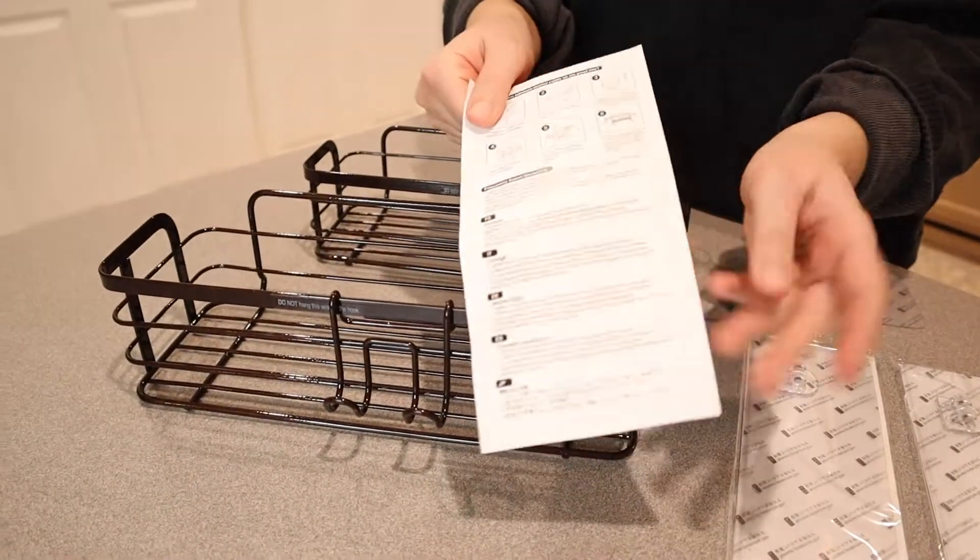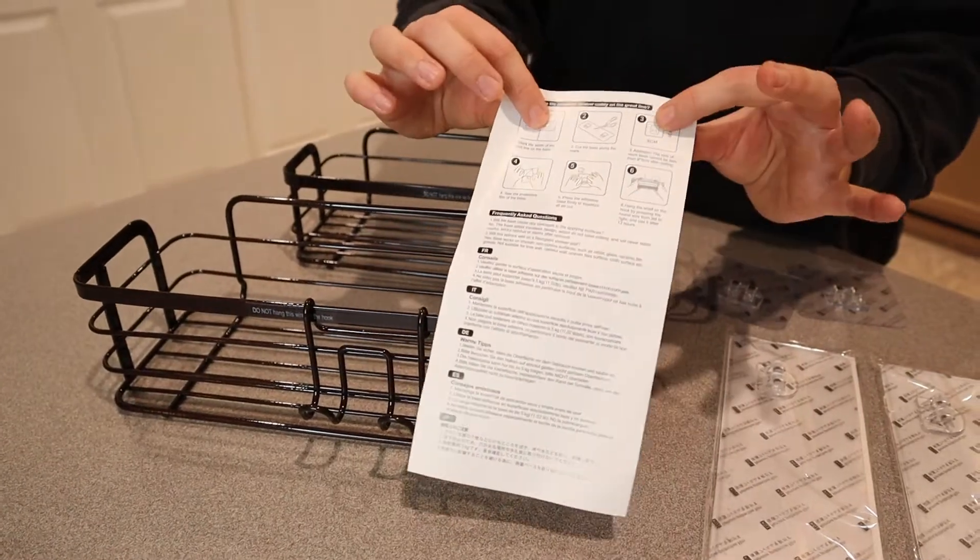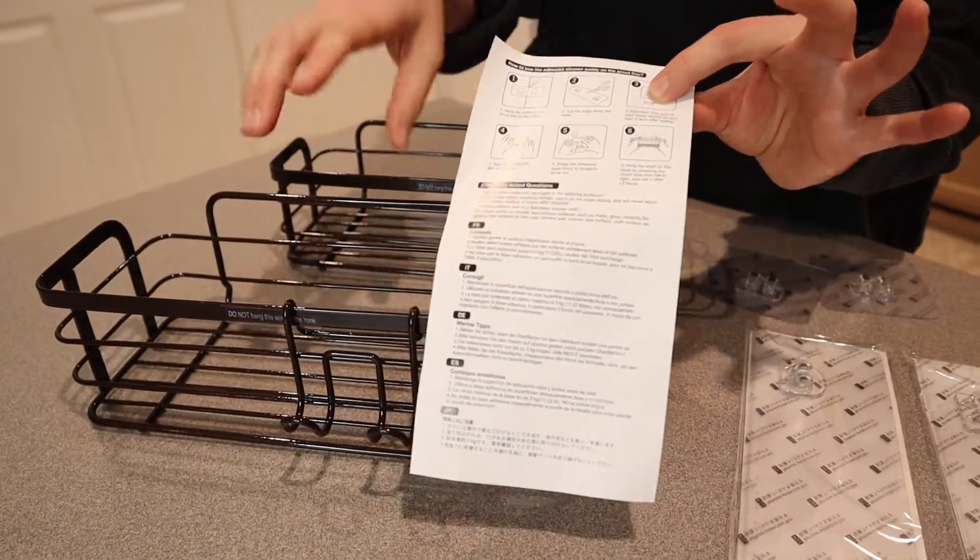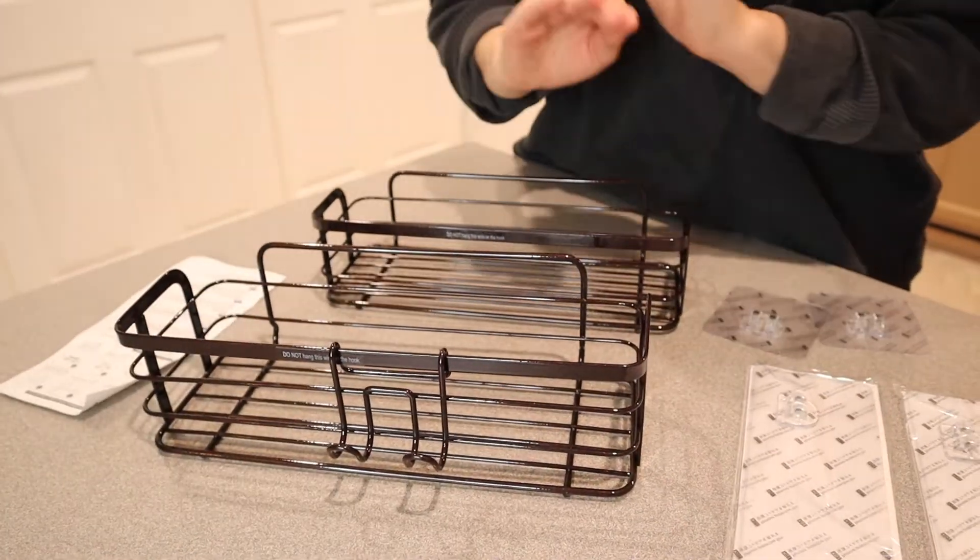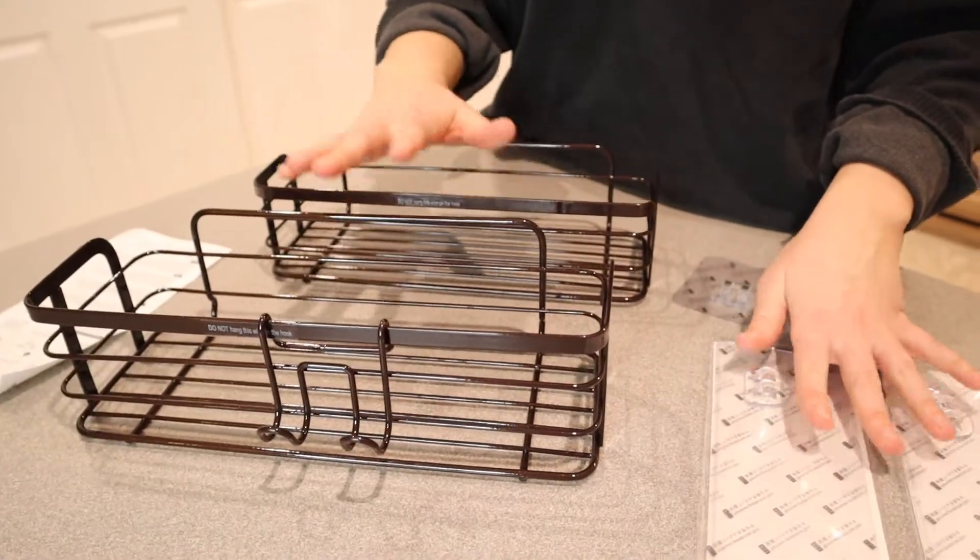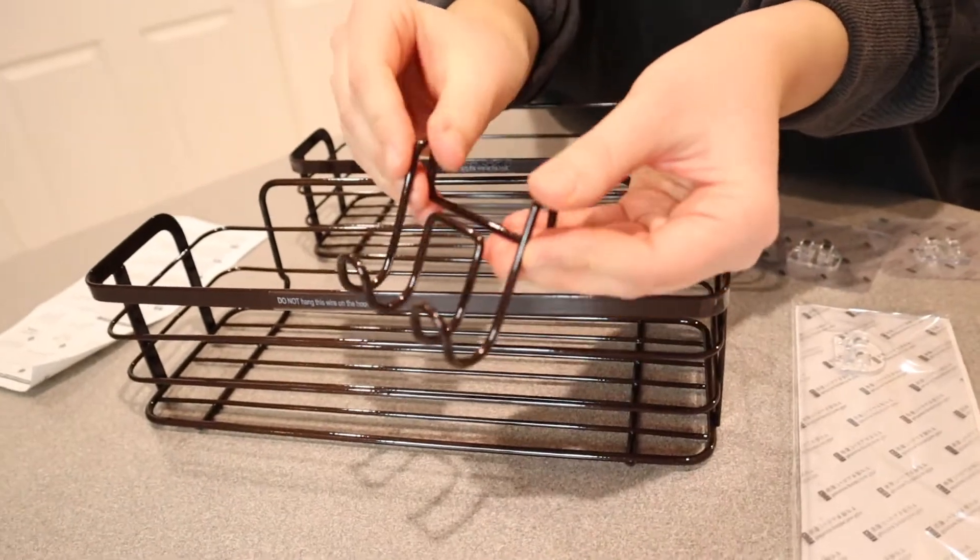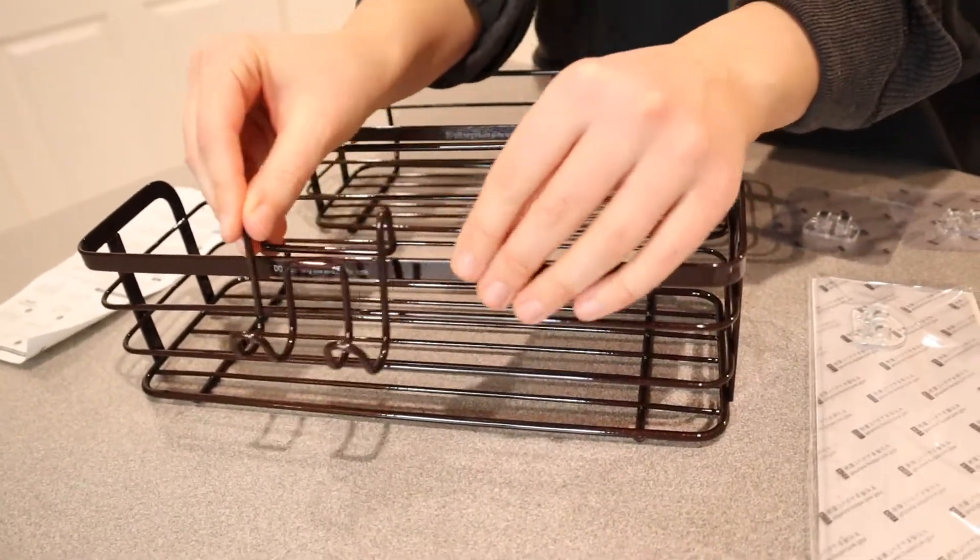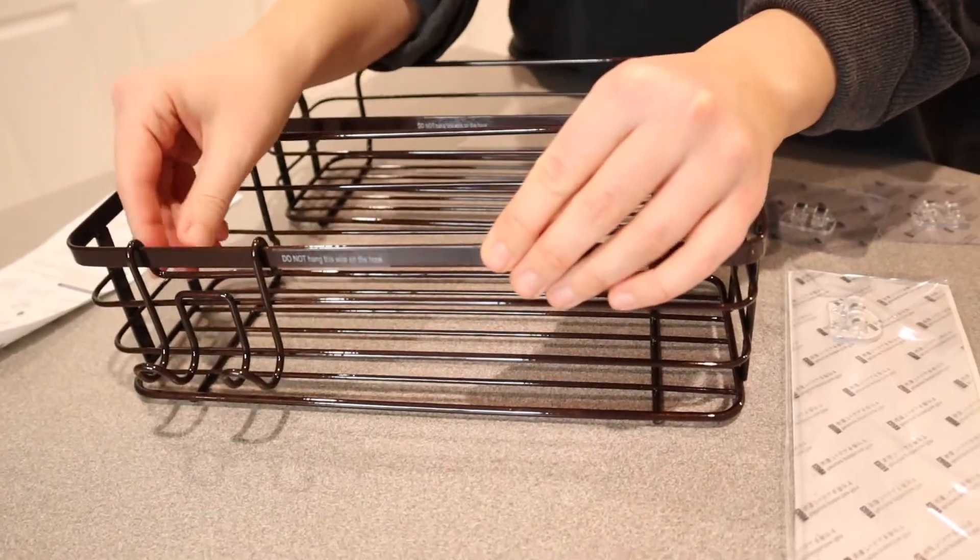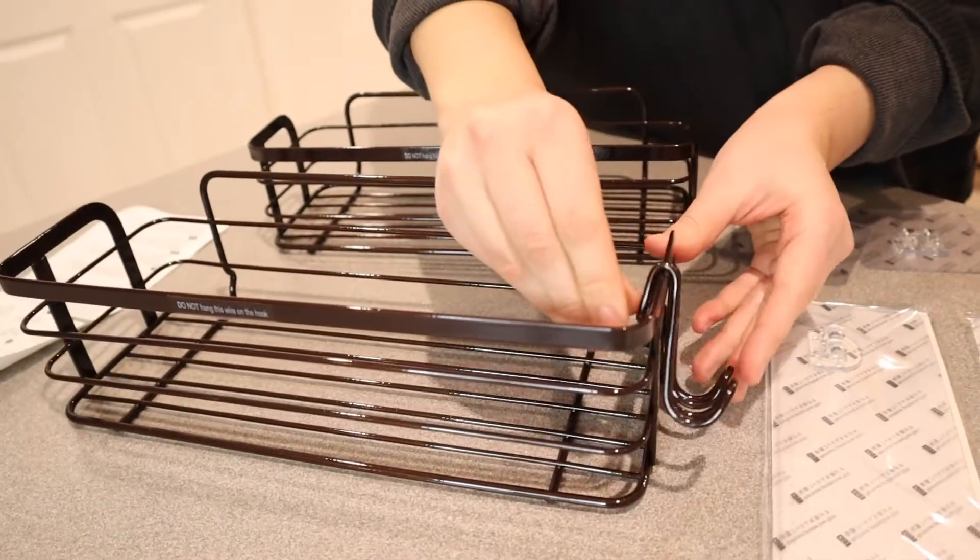All right. So I'm just going to show you what this comes with first. It comes with a user manual, which has pictures and super simple to follow, very self-explanatory, which I love when products have good instructions. This is the larger piece and it has an extra little hanger. You can add, for example, if you want to hang your loofah or something like that, you can easily hang it on whatever section you want to.